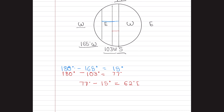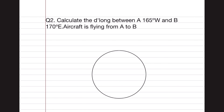62 degrees East — that is our final answer for question one. Second question: calculate the D-Long between A at 165 degrees West and B at 170 degrees East. The aircraft is flying from A to B.